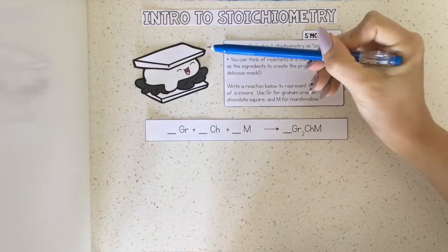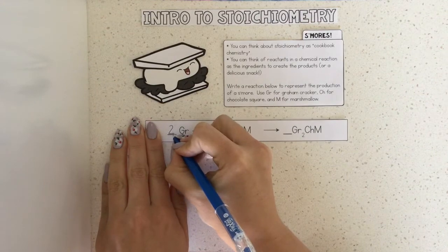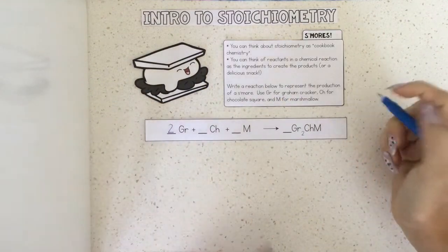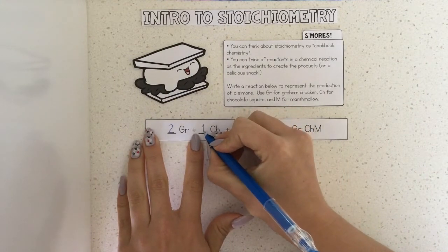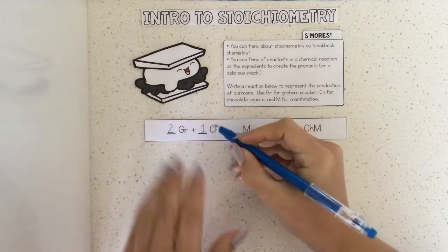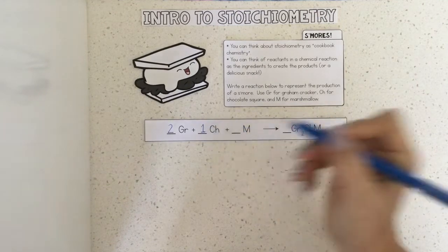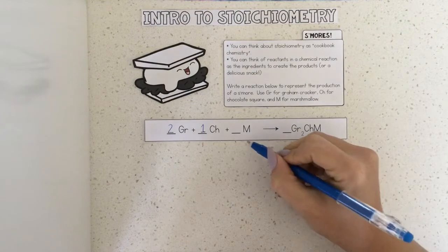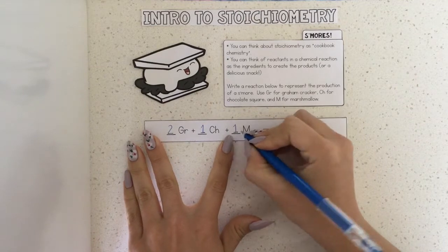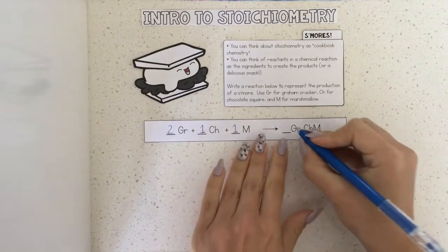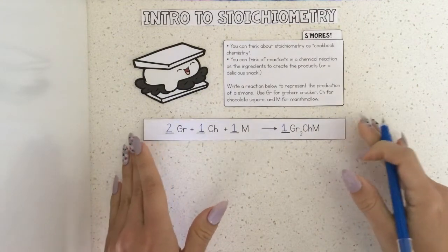Our ingredients call for two graham crackers, so we're going to put a coefficient of two in front of our symbol for graham cracker. We need one chocolate square, so we'll put a one right here. Remember in chemical reactions, in front of a reactant or product where you just need one of them, you don't have to put the one — you just leave it blank. We also need one marshmallow. That forms our one product: one s'more. So that's basically your recipe for a s'more.